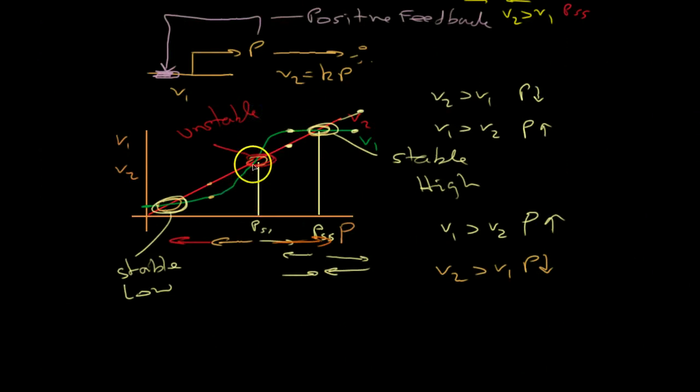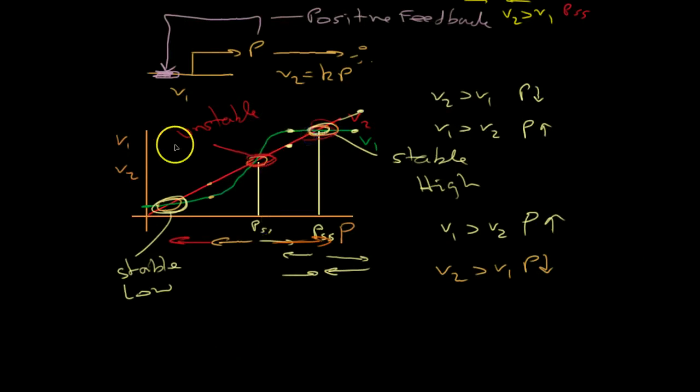So, if I make a perturbation above this point, the system evolved to the high state. If I make the perturbation below this point, the system evolved to the low state. So, here we have a system that uses positive feedback that has three steady states, two stable and one unstable. Okay, so we'll continue this discussion in the next video. Thank you.